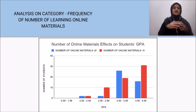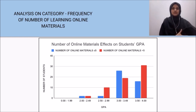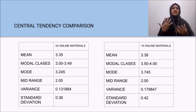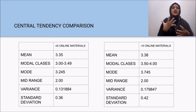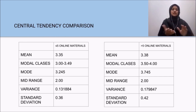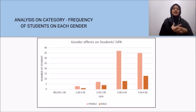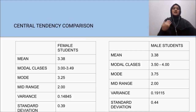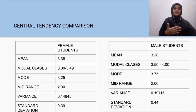Next is the analysis of category frequency of the number of online learning materials' effect on student GPA. Comparing the mean, mode, mid-range, variance, and standard deviation, students who use more than 5 online materials score higher than students who use fewer. For the analysis of category frequency by gender, comparing the same measures, female students scored higher than male students in online learning materials.